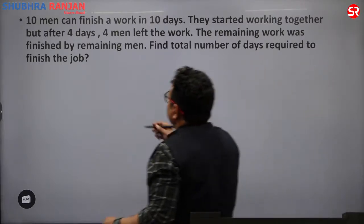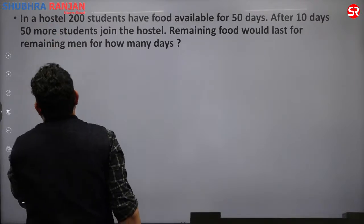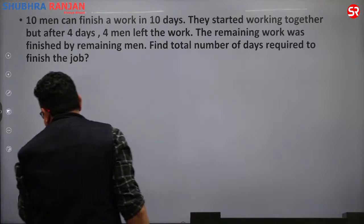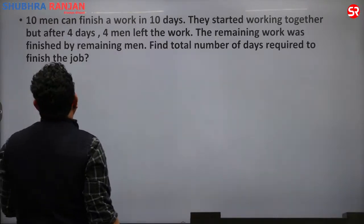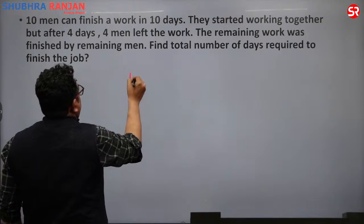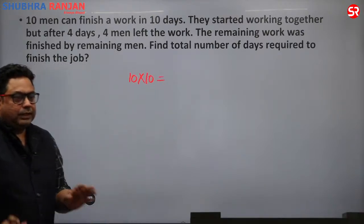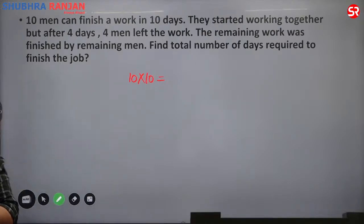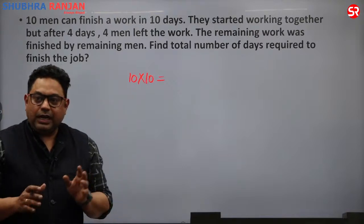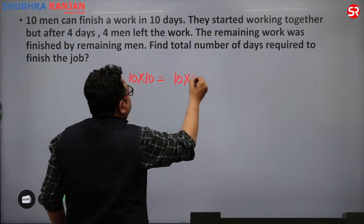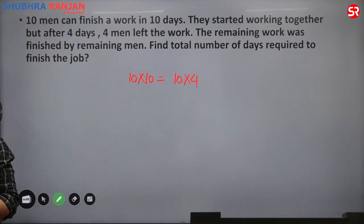Total work equals 10 × 10 equals 100 units. All 10 men were working for 4 days, so work done in 4 days equals 10 × 4 equals 40 units. After 4 days, 4 men left. Remaining 6 men worked for D2 days on the remaining work.